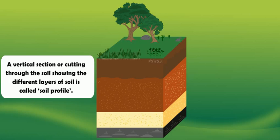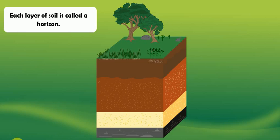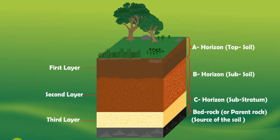Soil profile: A vertical section or cutting through the soil showing the different layers of soil is called a soil profile. Each layer of soil is called a horizon. The top layer of soil is also called topsoil. The topsoil contains many living things and a lot of humus.